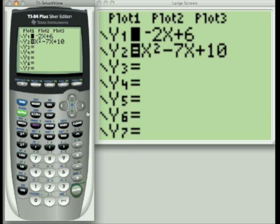If I hit enter and arrow back to my equation, you'll notice that the equals sign is not highlighted anymore. When the equals sign is not highlighted, this graph will be turned off. When it is highlighted, this graph will be turned on.